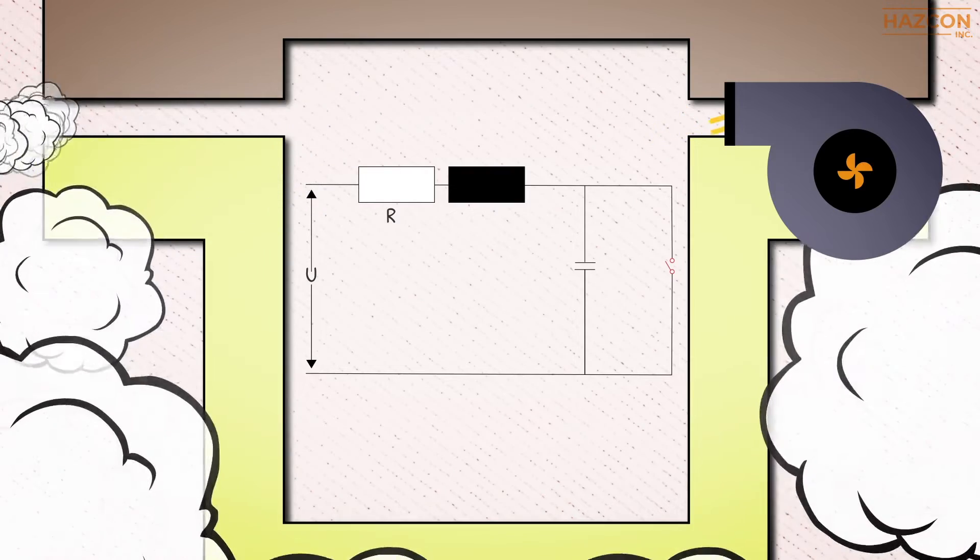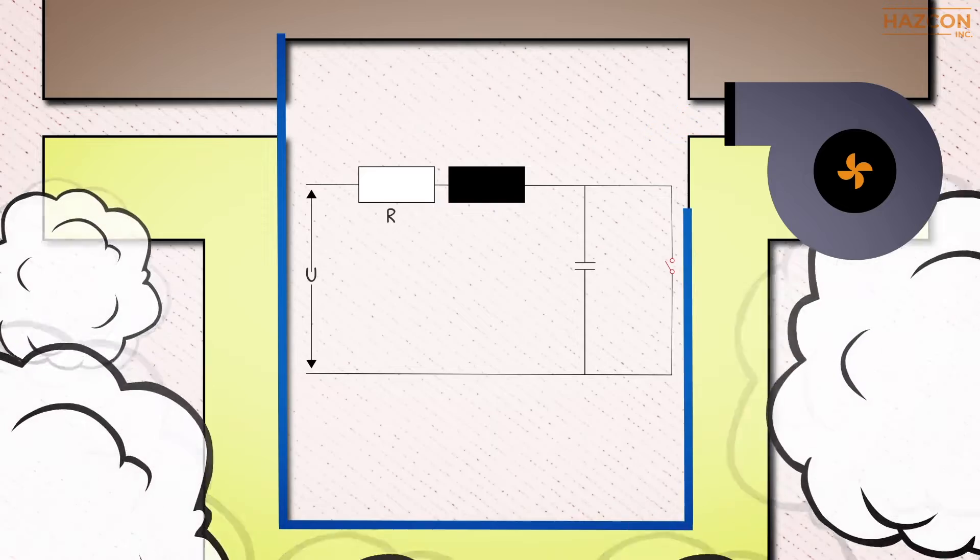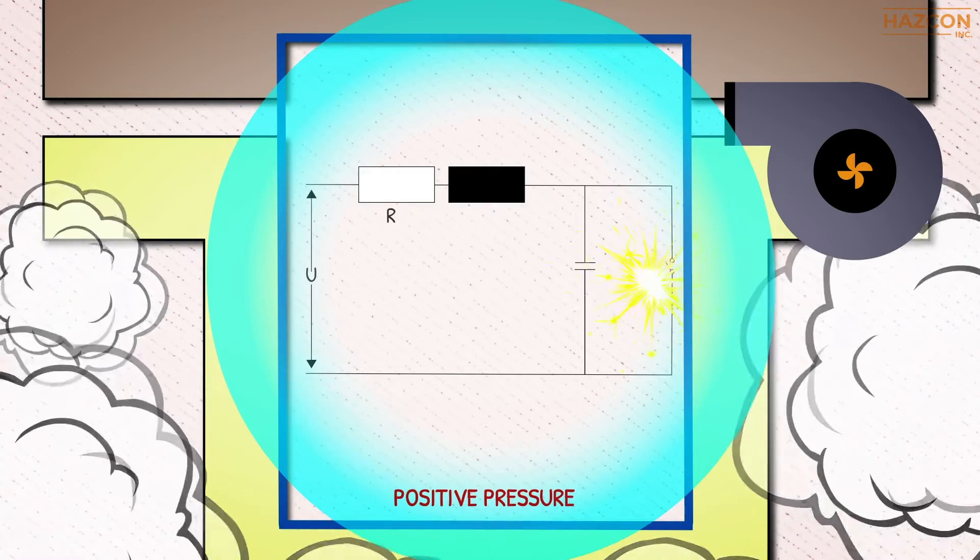Then the atmosphere inside the enclosure is pressurized with a non-explosive gas to achieve and maintain a positive pressure with respect to the atmosphere outside the enclosure. Such positive pressure prevents the ingress of any hazardous substances that exist in the atmosphere surrounding the enclosure.